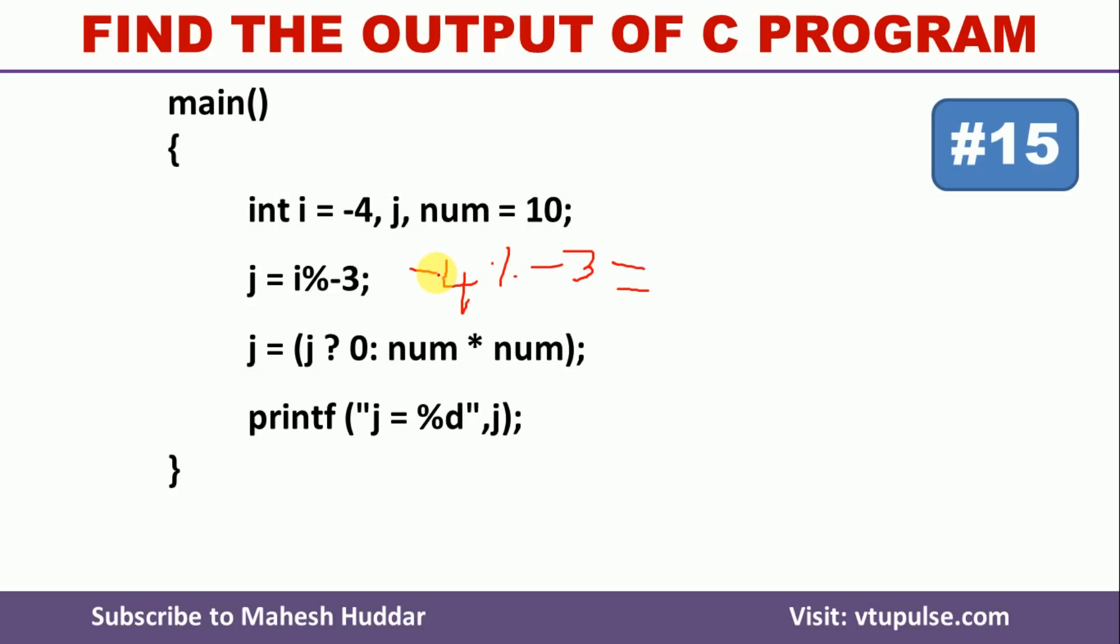So it will become minus 4 mod minus 3 in this case, which is equivalent to, we have a minus on both sides of this particular modulus operator. We cannot cancel these two minus operators here. What we need to do in C programming language is do the normal modulus operator without considering this minus sign.